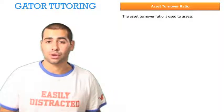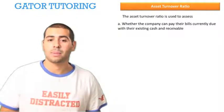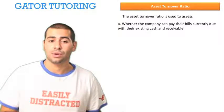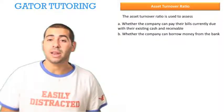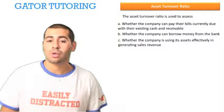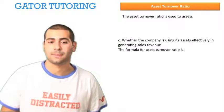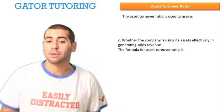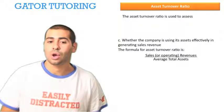The asset turnover ratio is used to assess: a) whether the company can pay their bills currently due with their existing cash and receivables, b) whether the company can borrow money from the bank, c) whether the company is using its assets effectively in generating sales revenues. The answer is c. The formula for asset turnover ratio is sales or operating revenues divided by average total assets.